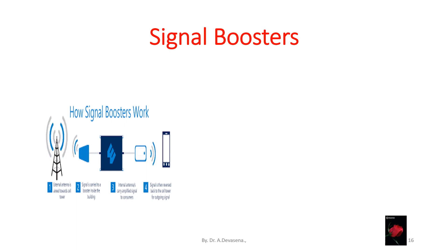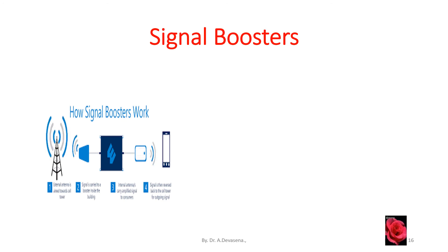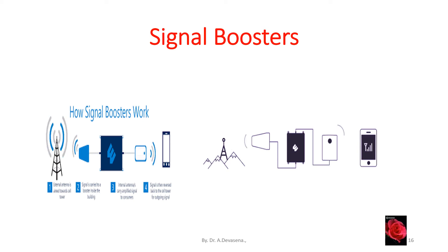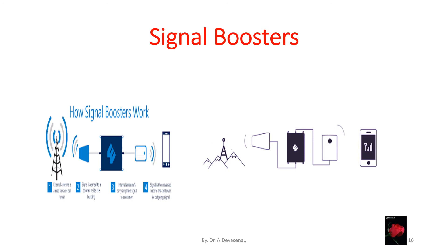The smartphone needs a strong signal. For obtaining this strong signal, we are using signal boosters. The signals are originated from the base station and have to reach the mobile phone. Before reaching the mobile phone, the signal has to be boosted properly so that it is possible for the sender and receiver to have a strong connection between them.